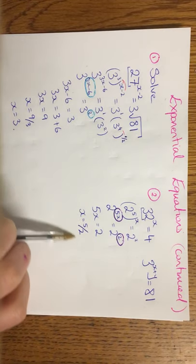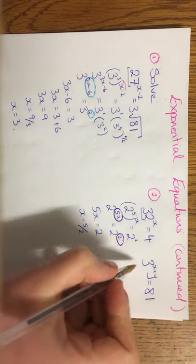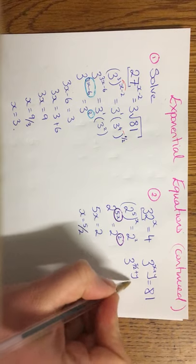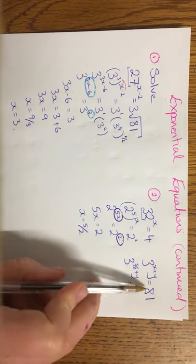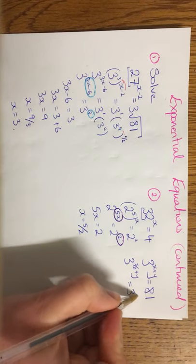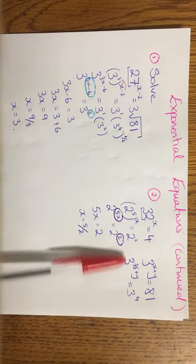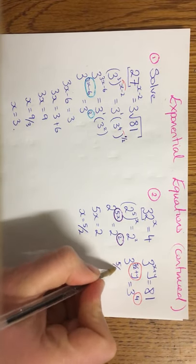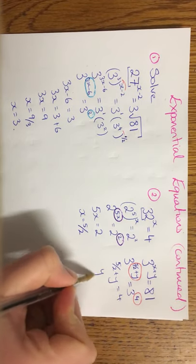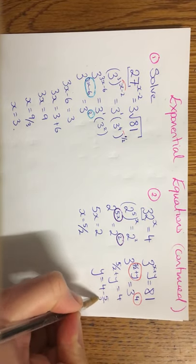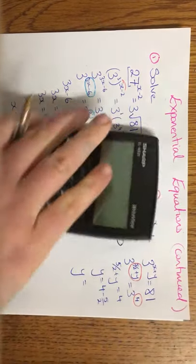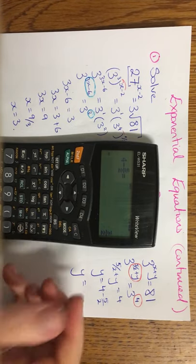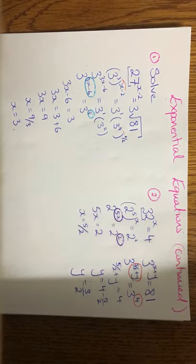And over here then you're using this answer here to help you solve this one over here. So instead of x I can write 5 over 2 plus y equals. So 3 is going to be my base. Rewrite 81 with 3 as a base. It's 3 to the power of 4. Same base on both sides. So what do we do? Circle, circle. So I have 5 over 2 plus y is equal to 4. So y is equal to 4 minus 5 over 2. Y is equal to, so 1 and a half or 3 over 2.